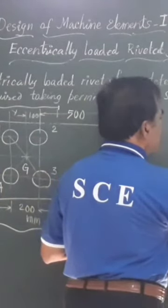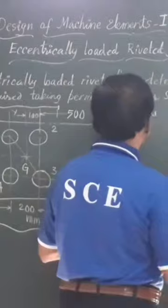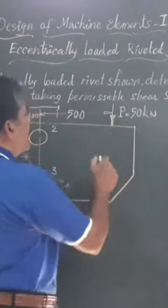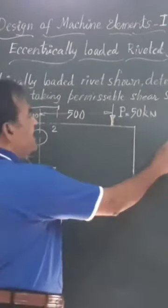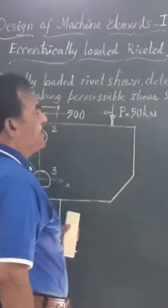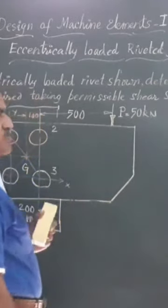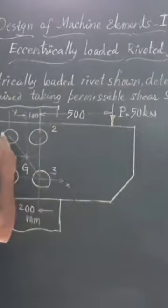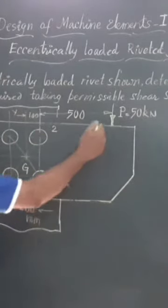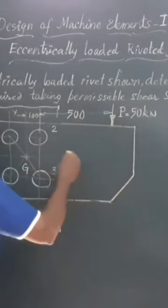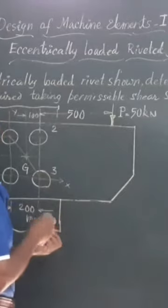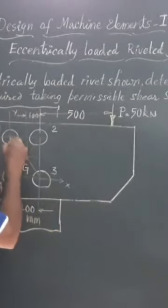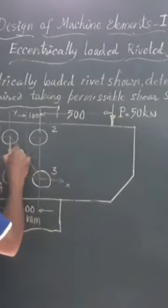The load is acting in the downward direction. This Fd equal to 12.5 × 10³ newtons acts at the center of each rivet (rivets 1, 2, 3, and 4) in the direction of P - that is, in the downward direction and parallel to P. Hence, I am going to show this Fd downward.